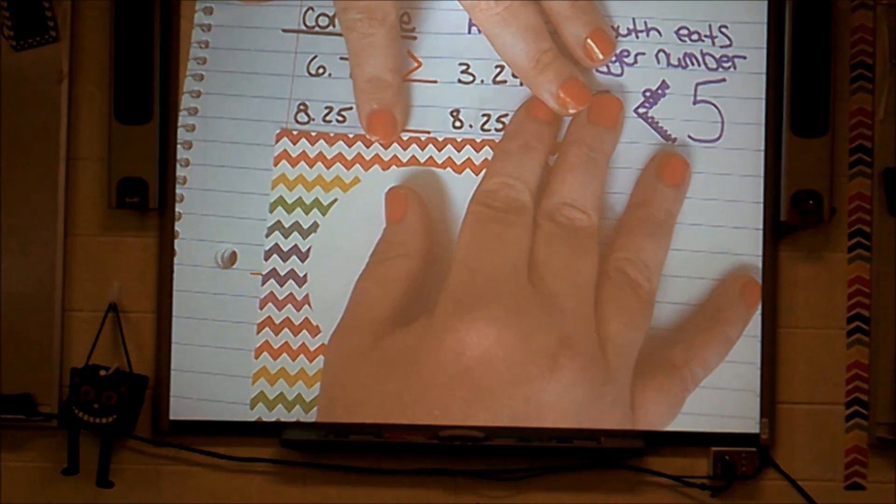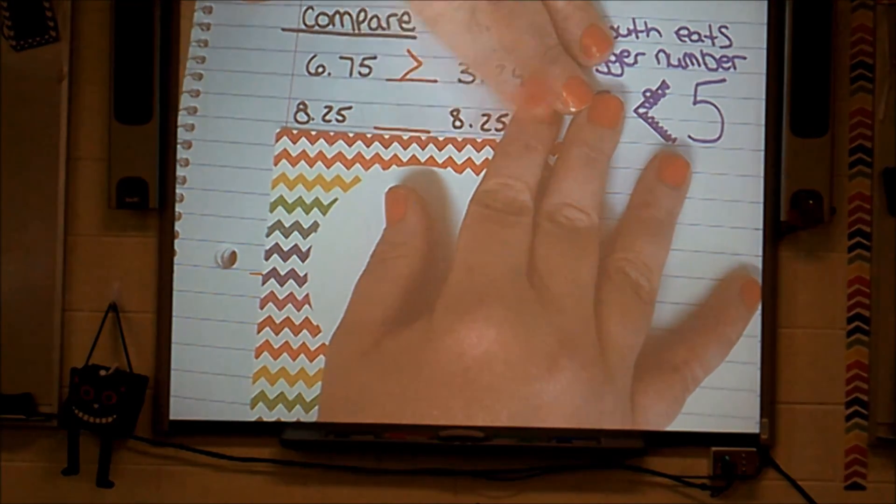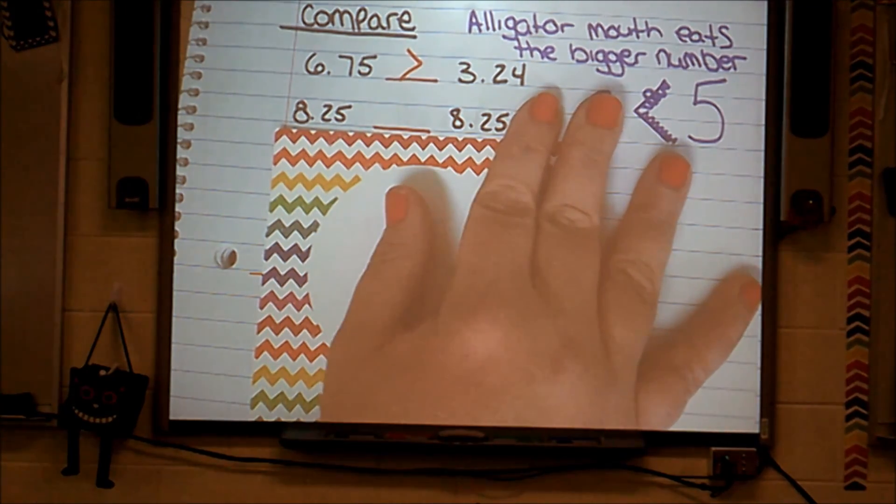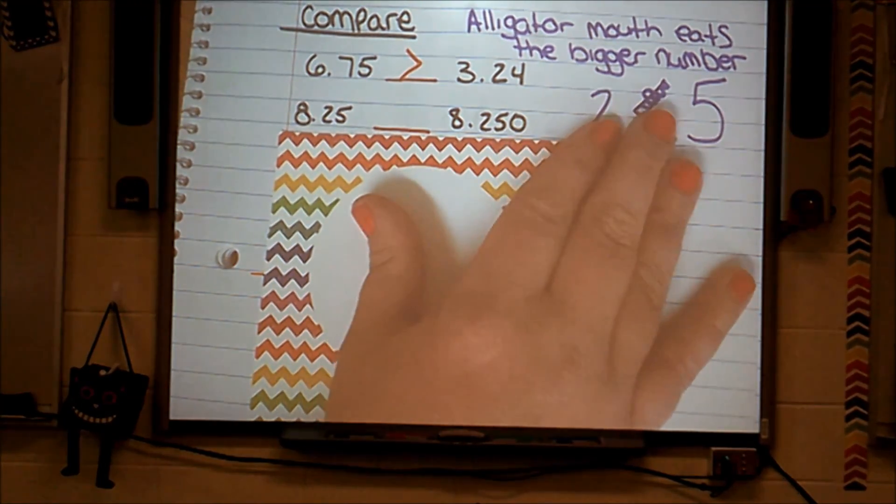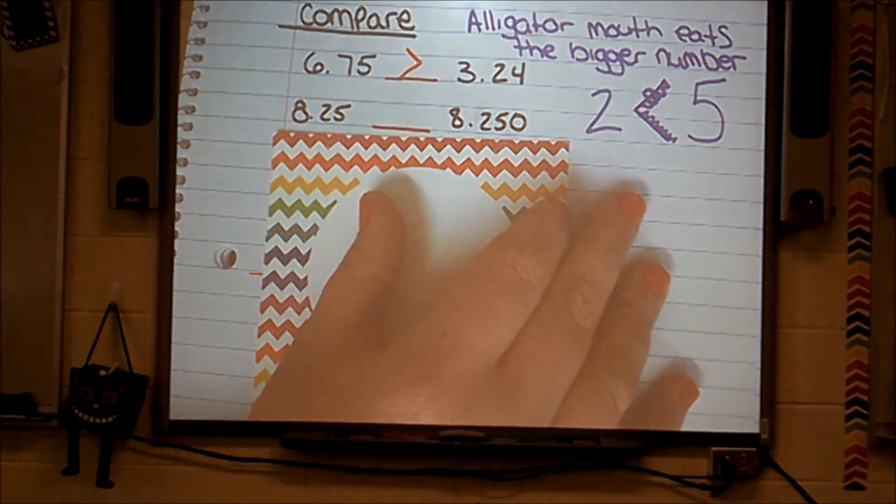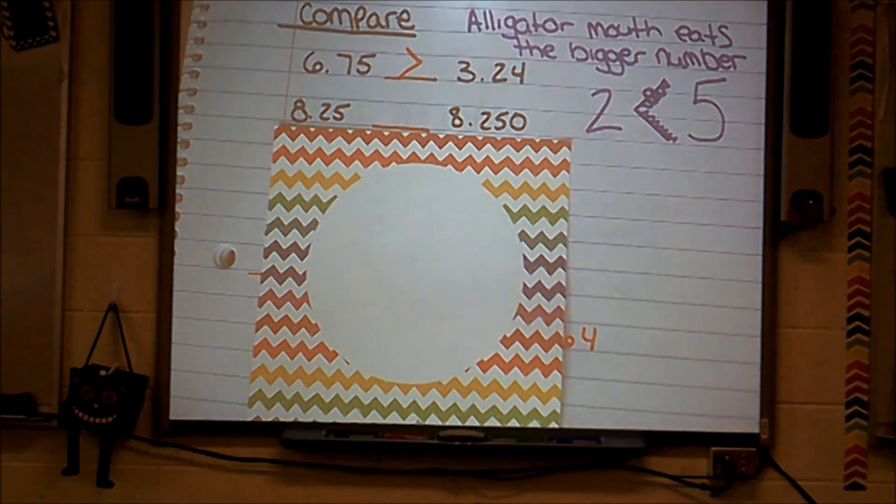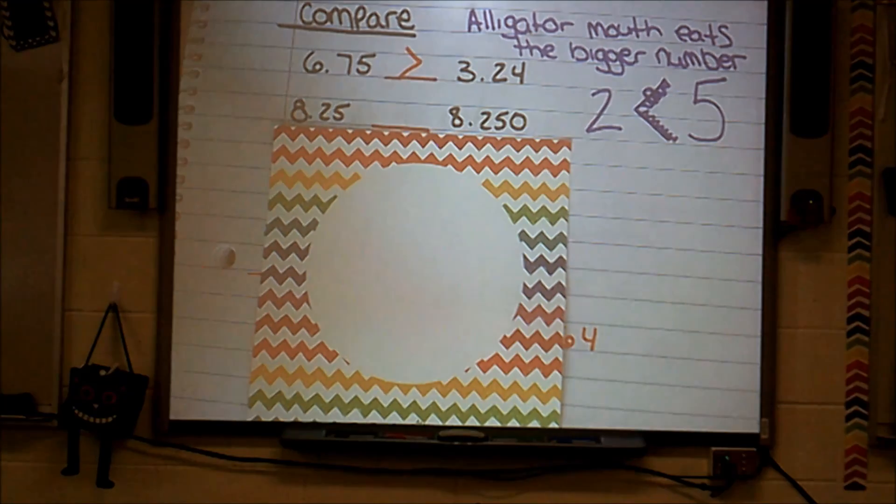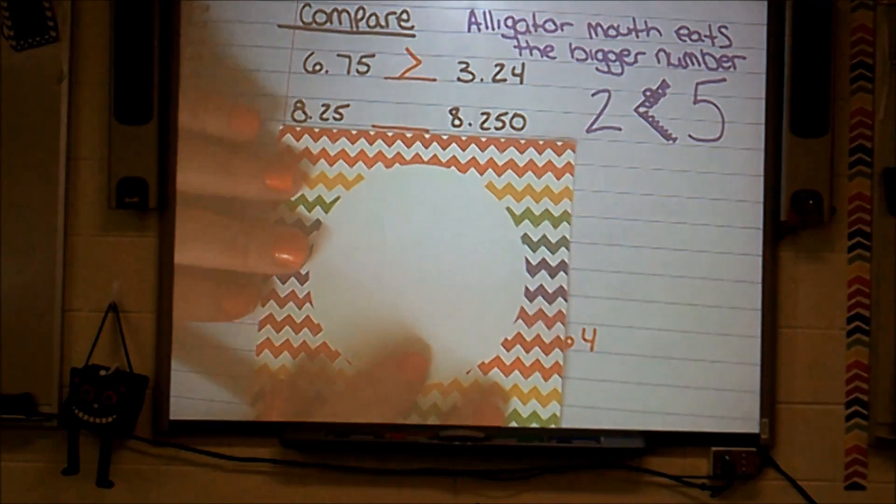Let's go to the next place value. Well this number doesn't have any more place value. And this place value is a zero. Now what I know about decimals, as I said earlier, is I can add zeros to the ends of a number after a decimal and it does not change the value of that decimal.